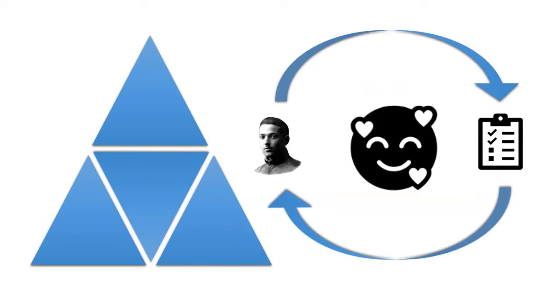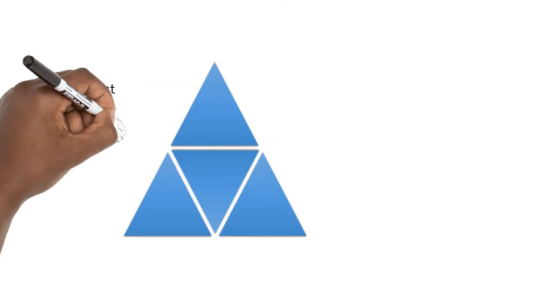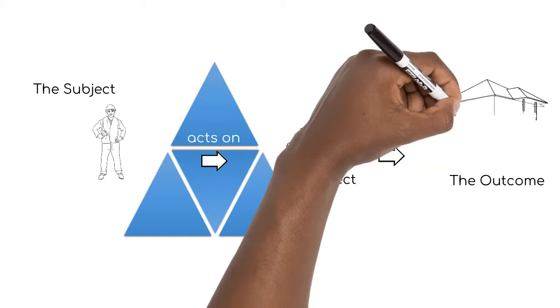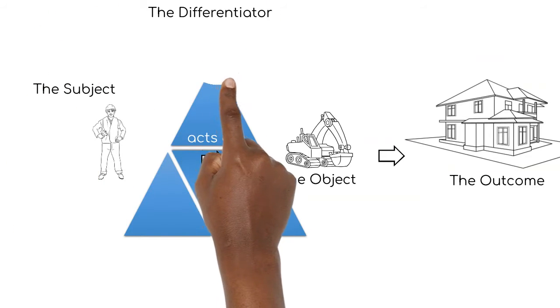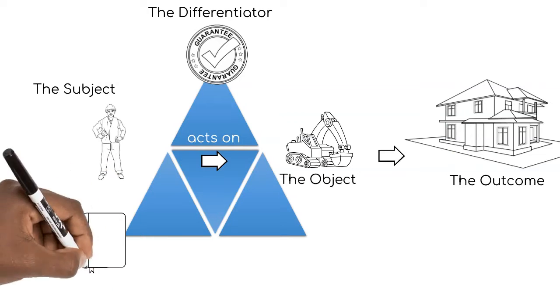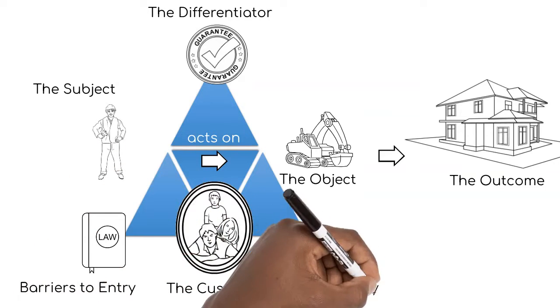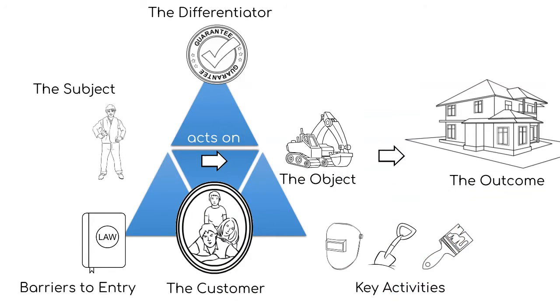In its abstract form, our chat as a business model looks like this: there is a subject who acts on the object, and the object produces the outcome. The subject has a differentiator and is aware of the barriers to entry to the industry. They produce the outcome on behalf of the customer and perform specific key activities to produce the outcome.